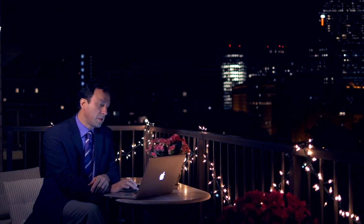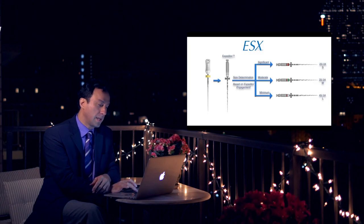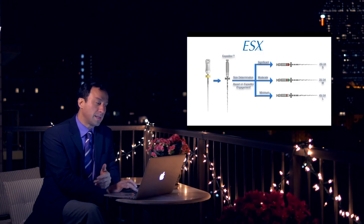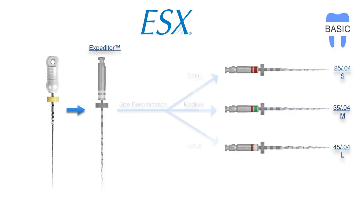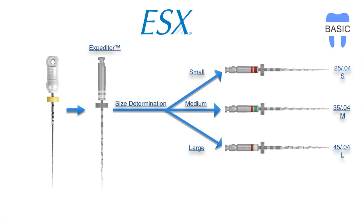Let's quickly review the ESX technique. I have done some tutorials on the website that you can check out, but the basic ESX technique involves getting the size 15.02 hand file down, then the expediter using the SSE technique. Based on your canal size, you use a small, medium, or large finishing file — the ESX finishing file, which is 25, 35, or 45.